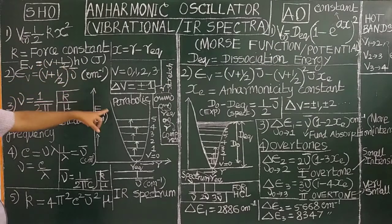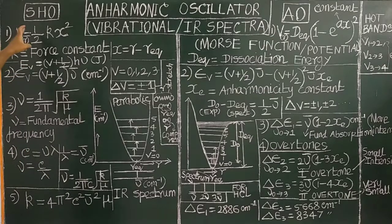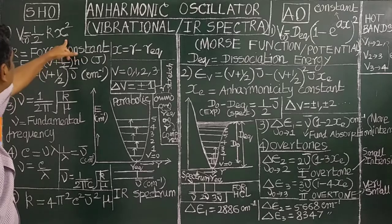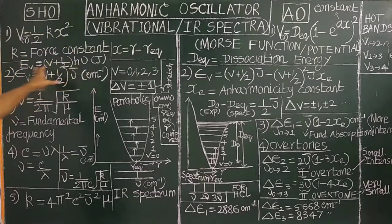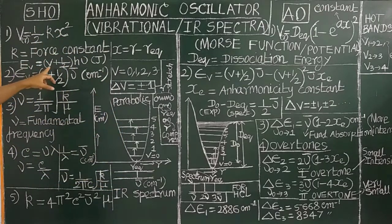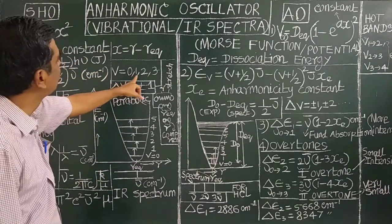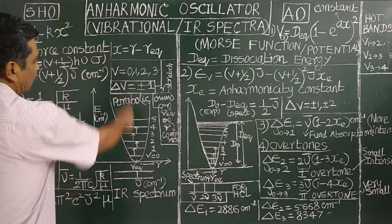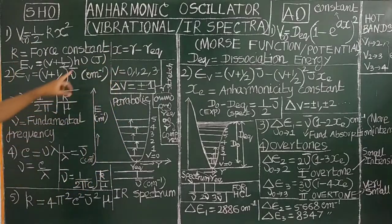By solving the Schrödinger wave equation using this potential, the energy expression is obtained. These are all called vibration energy levels. V is the vibrational quantum number: 0, 1, 2, 3, etc. This expression gives the quantized vibration energy levels in terms of (V + 1/2)hν.